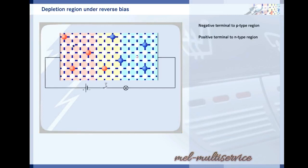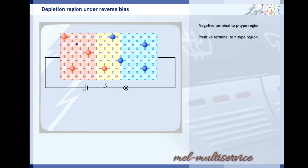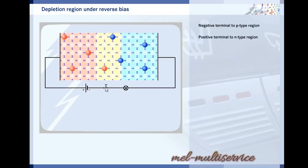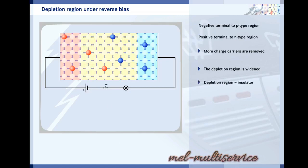What happens when you apply the negative terminal of an external circuit to the p-type region and the positive terminal of an external circuit to the n-type region? The electrons in the n-type region are attracted by the positive voltage and the holes in the p-type region by the negative voltage. This draws off more charge carriers and the depletion region becomes wider. No current can flow. The depletion region acts as an insulator.